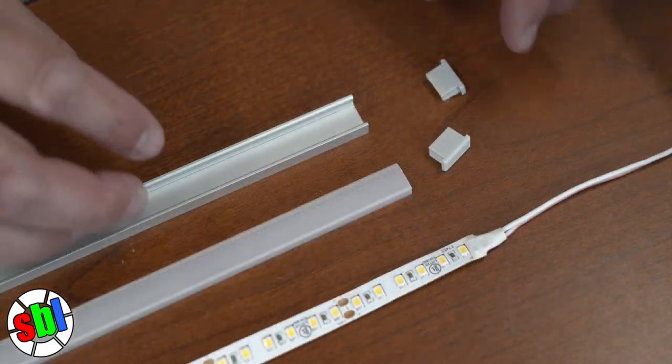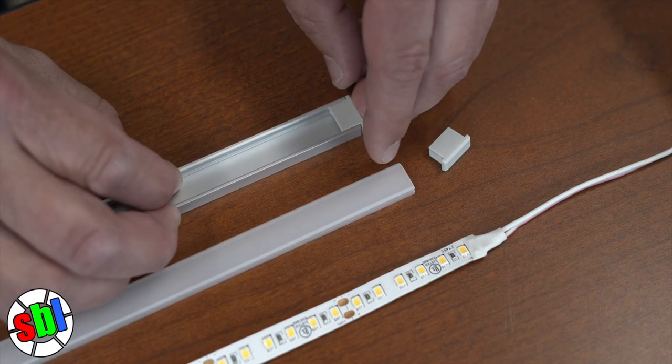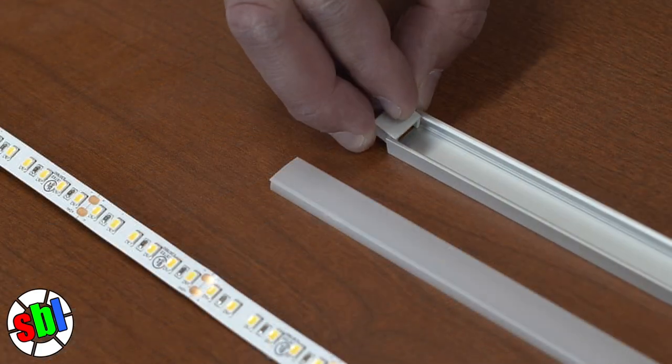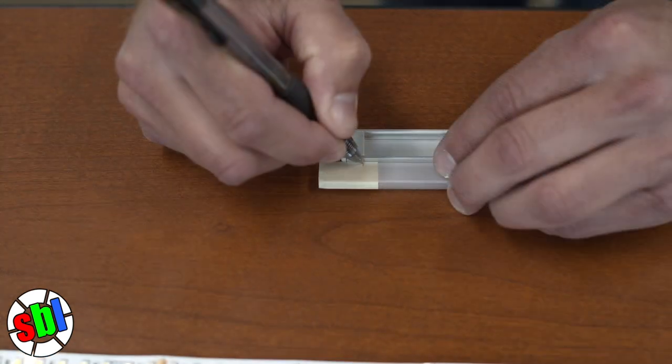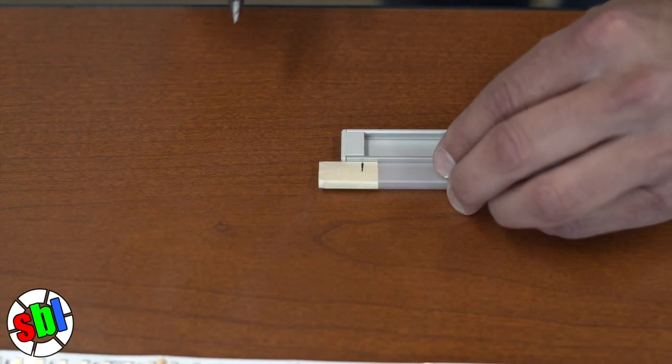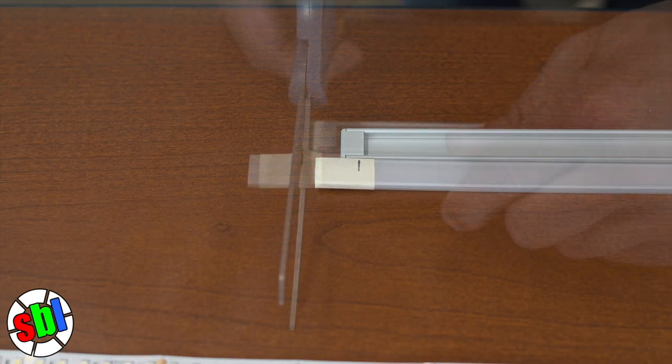To begin we will start by inserting the end caps on both ends. From here we'll be able to measure how much of the lens to cut. Make the proper markings for your measurement and cut the lens for the aluminum channel.